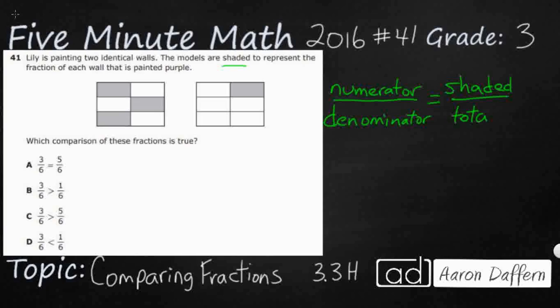Now, this is the total pieces for each wall, because we're looking at each wall separately. So we're not looking at a total of 12 pieces, we're looking at 6, because each wall has 6. So this is going to be 6ths, and this is going to be 6ths.